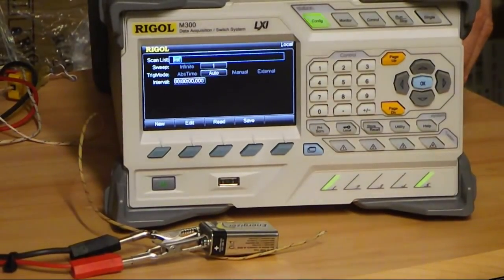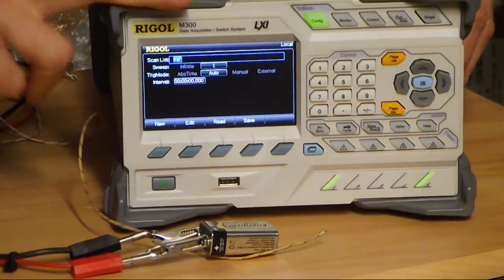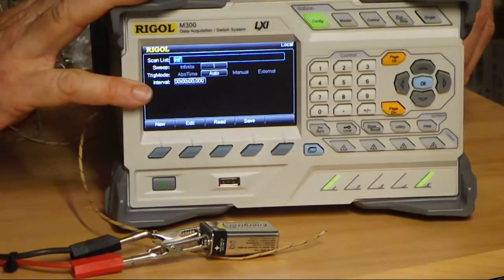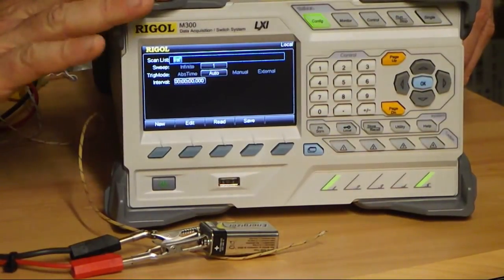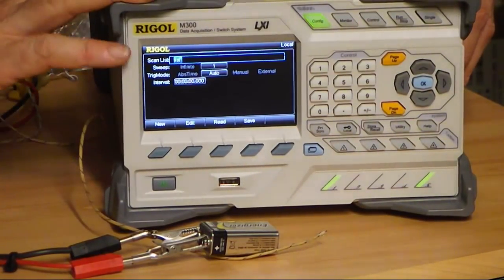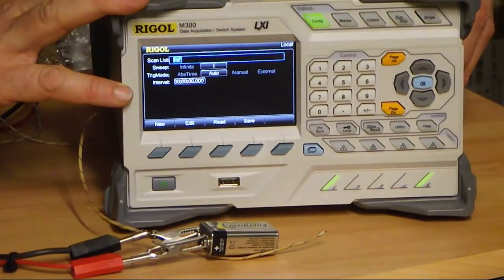So I have just shown you out of the box everything that you need to do to physically configure and configure on the front panel a scanning of multiple channels on the M301.